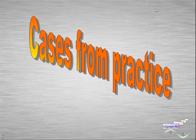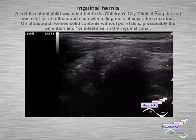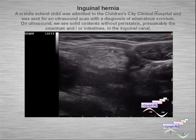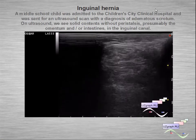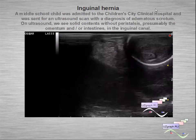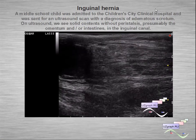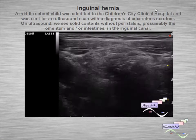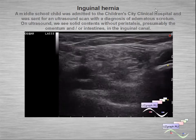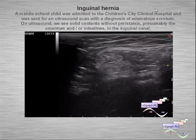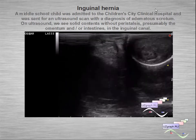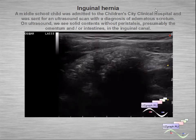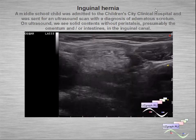Some cases from my practice. The first case of inguinal hernia: a middle-school child in the children's city hospital was sent for ultrasound with a diagnosis of edematous scrotum. On ultrasound we see solid content without peristalsis — presumably the omentum — in the inguinal canal.